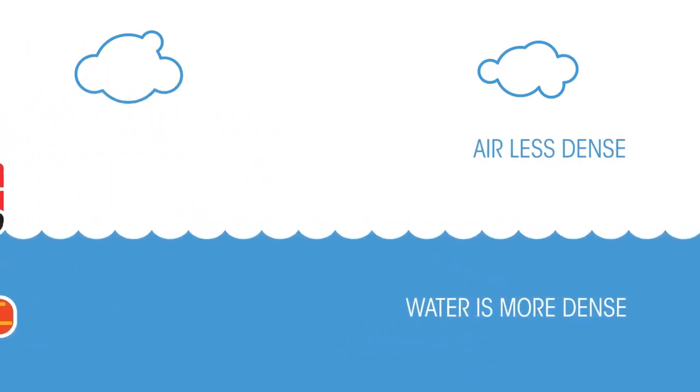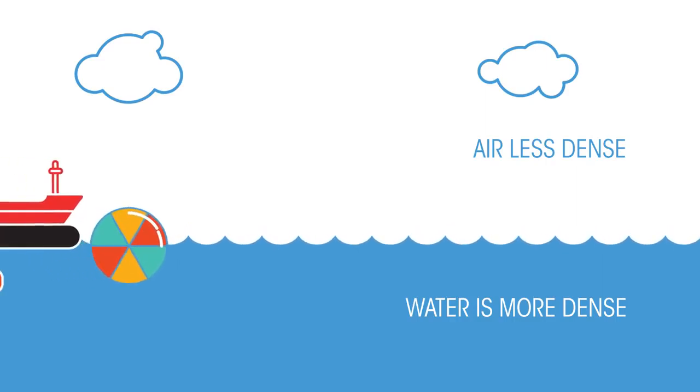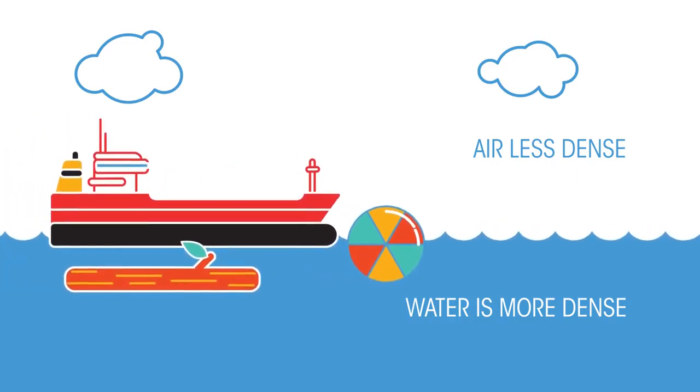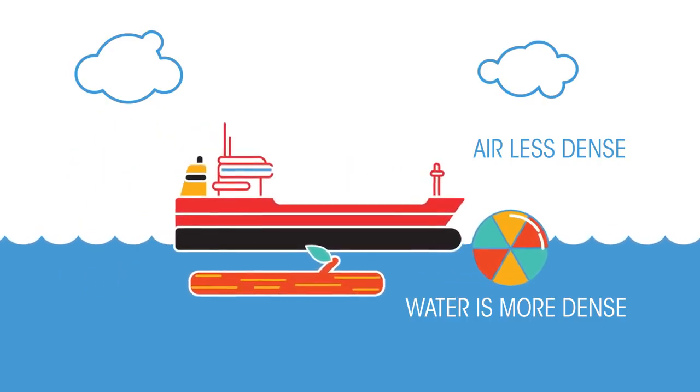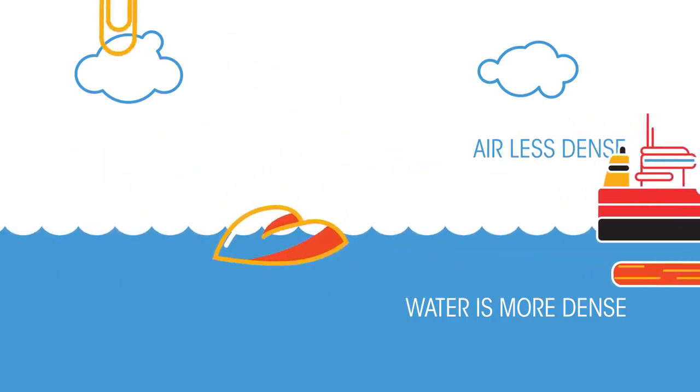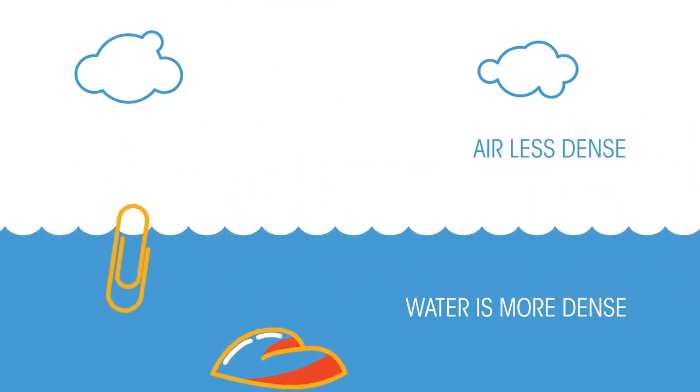Air is less dense than water. The beach ball, boat, and wooden log are also less dense than water, hence they float. But the pebble and the paperclip are more dense than water, and so sink.